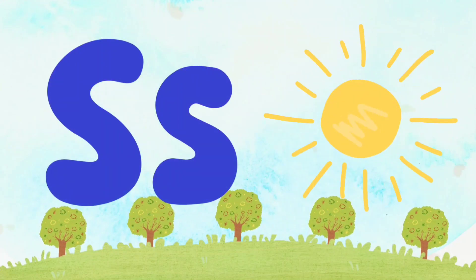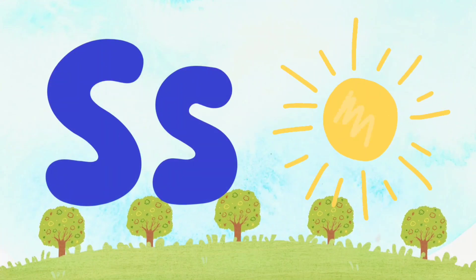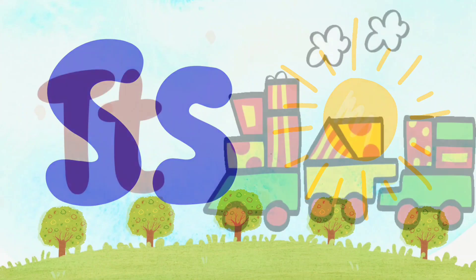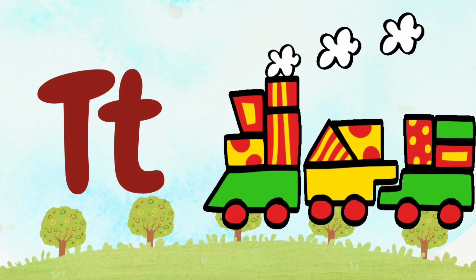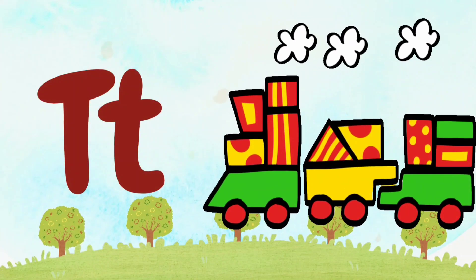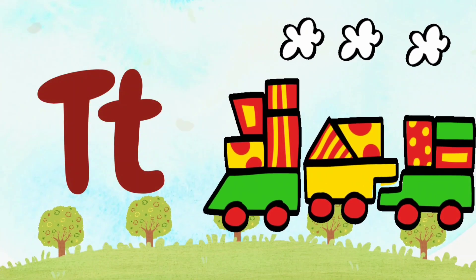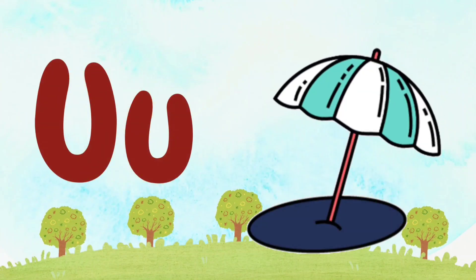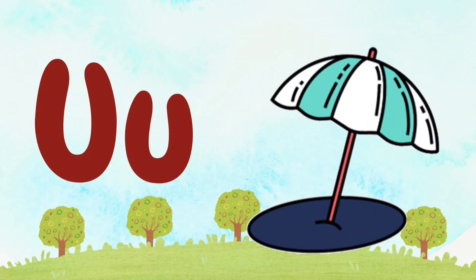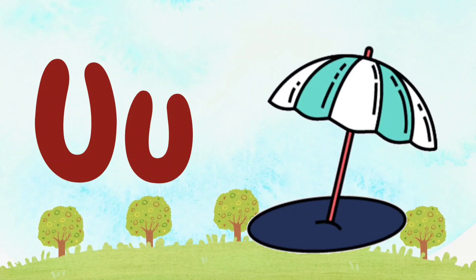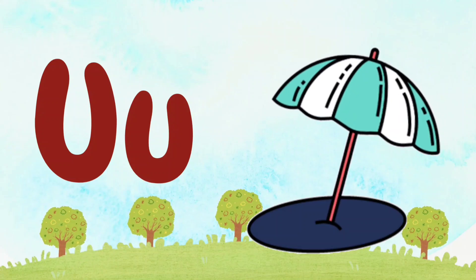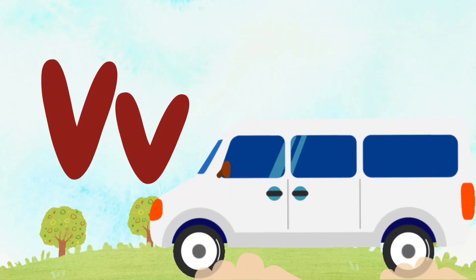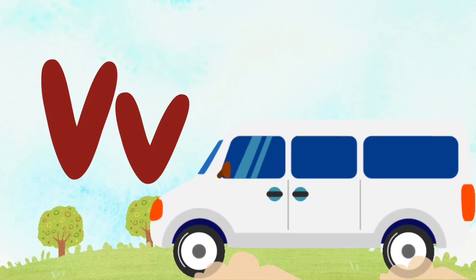S is for Sun. S. S. Sun. T for Train. U is for Umbrella. U. U. Umbrella.